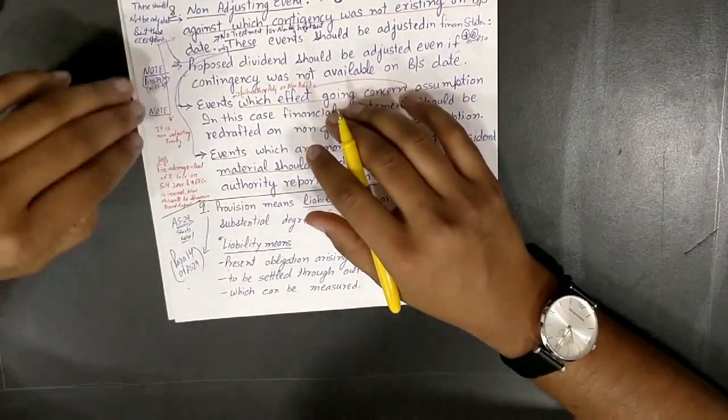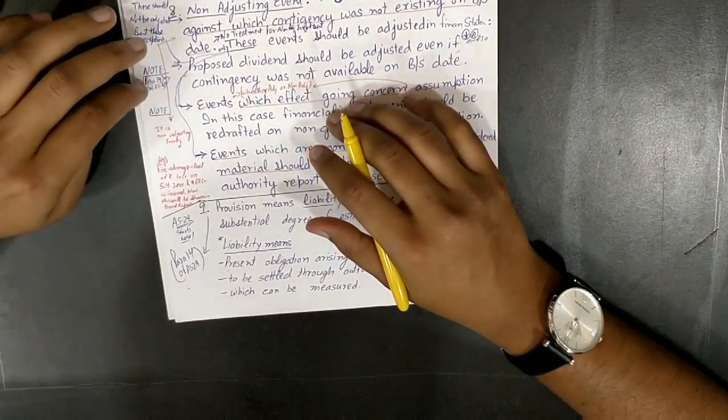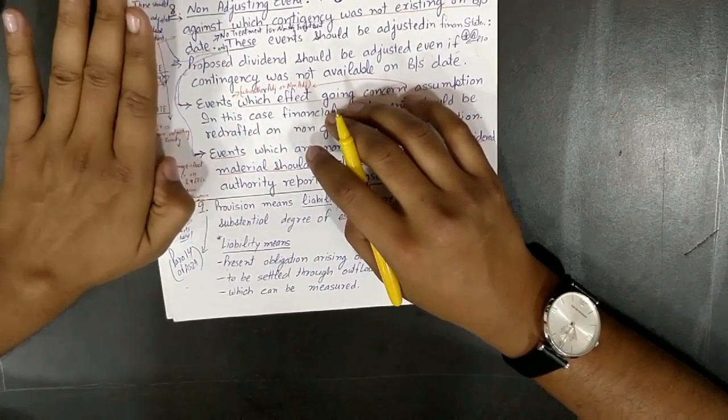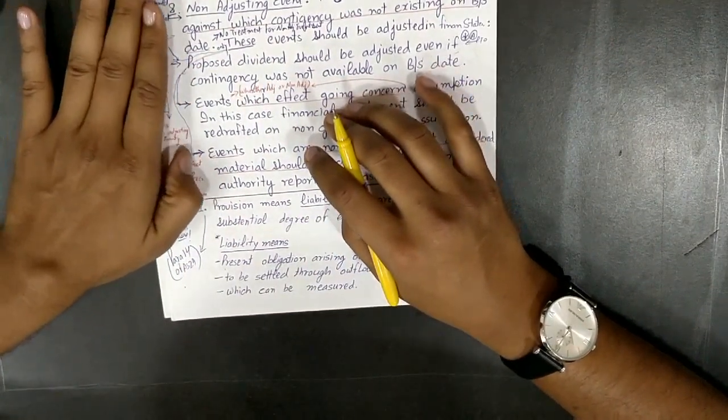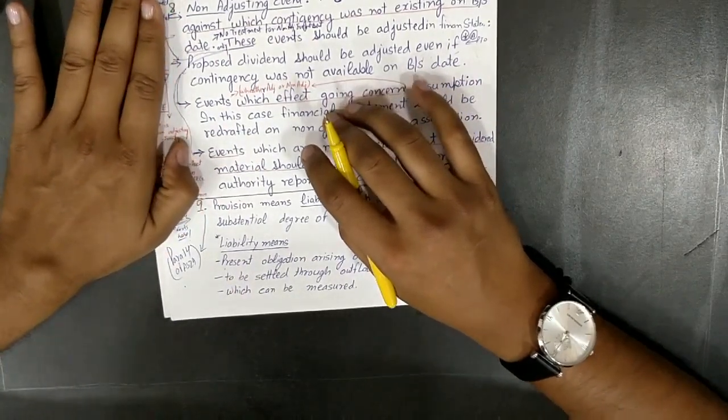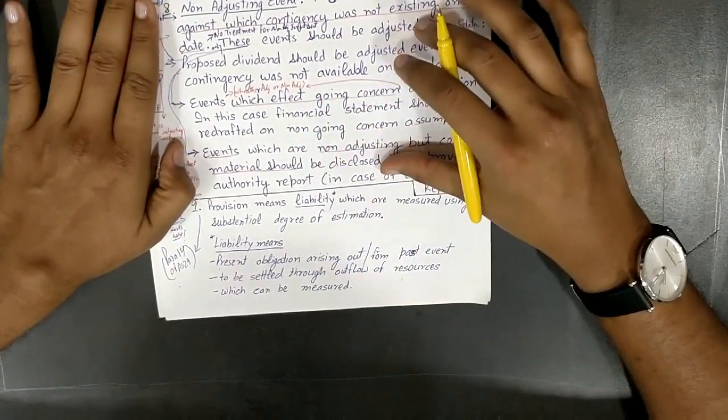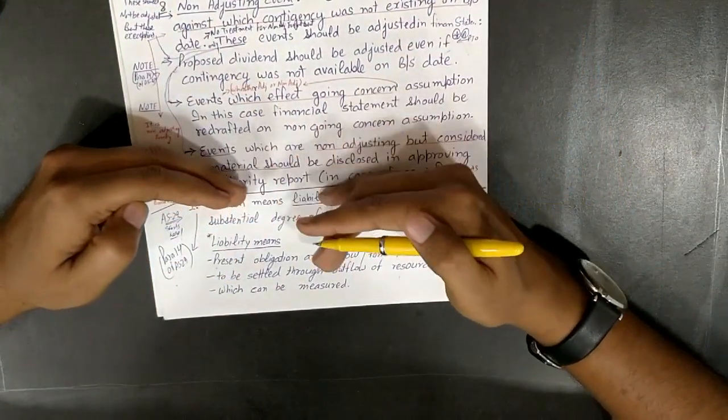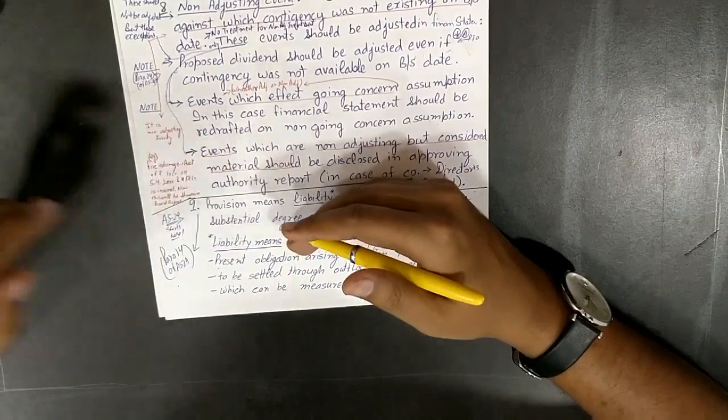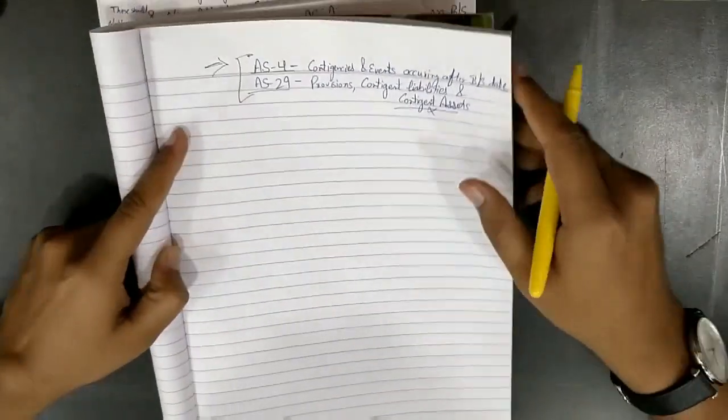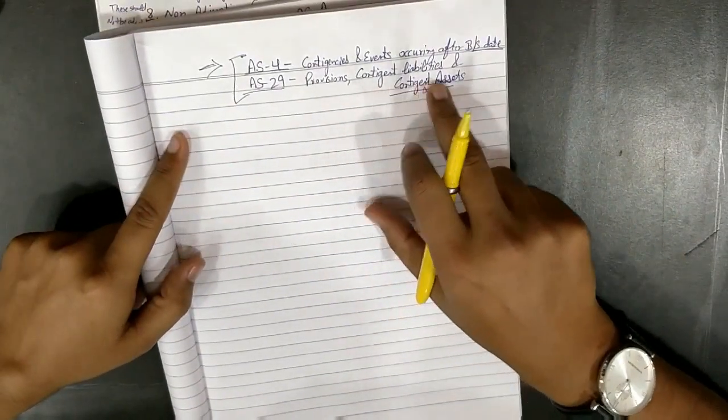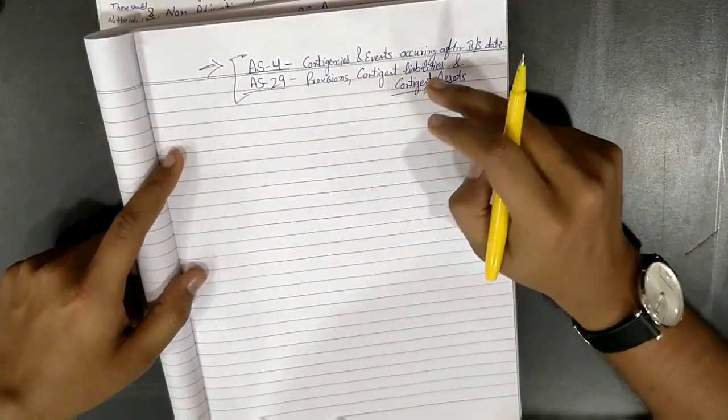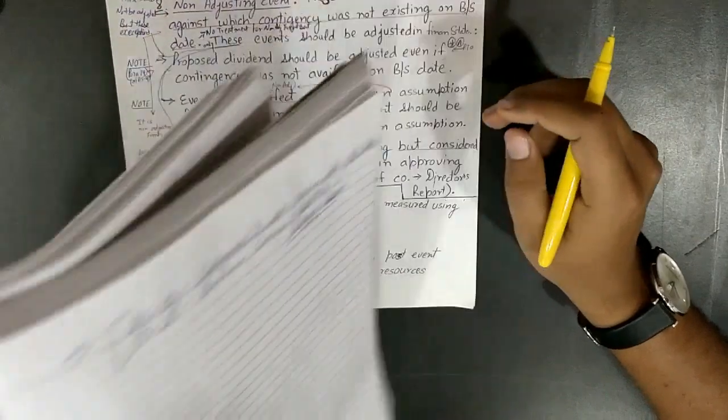I have written the paragraph numbers as para 14 of AS 4. You may read it through the notes, but I consider these are not really so much relevant. Now we'll move on to next accounting standard, AS number 29: Provisions, Contingent Liabilities, and Contingent Assets.